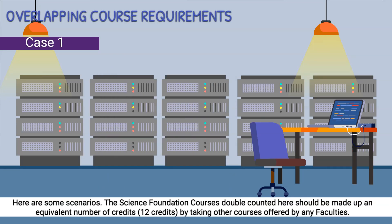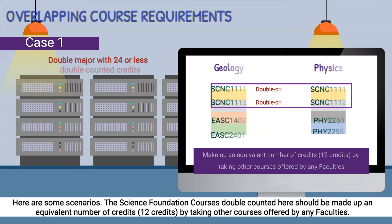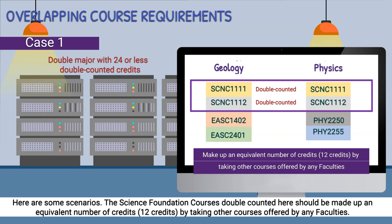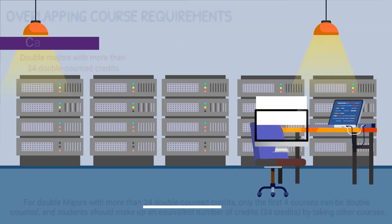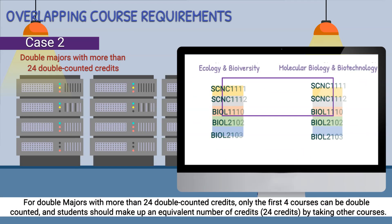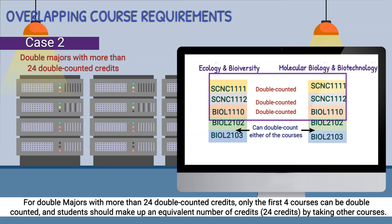Here are some scenarios. The science foundation courses double counted should be made up by an equivalent number of credits — 12 credits — by taking other courses offered by any faculty. For double majors with more than 24 double counted credits, only the first four courses can be double counted and students should make up an equivalent number of credits — 24 credits — by taking other courses.